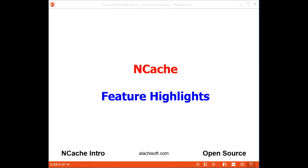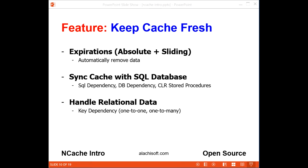Let's take a quick look at some of NCache's features. NCache has a number of ways to help you keep your cache data as fresh as possible without your application having to keep track of all this. You can use absolute and sliding expirations to automatically remove data from the cache. You can also have NCache automatically sync itself with a SQL database if data is changed by other applications. You can also specify one-to-many and one-to-one relationships of data in the cache so data integrity is not violated when the cache is updated.